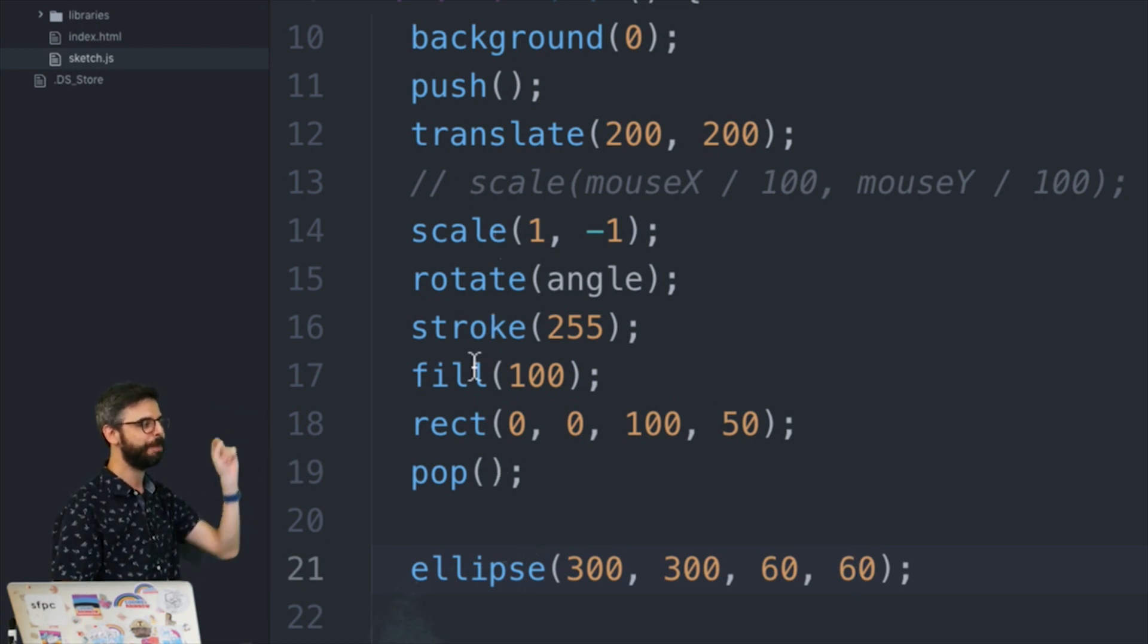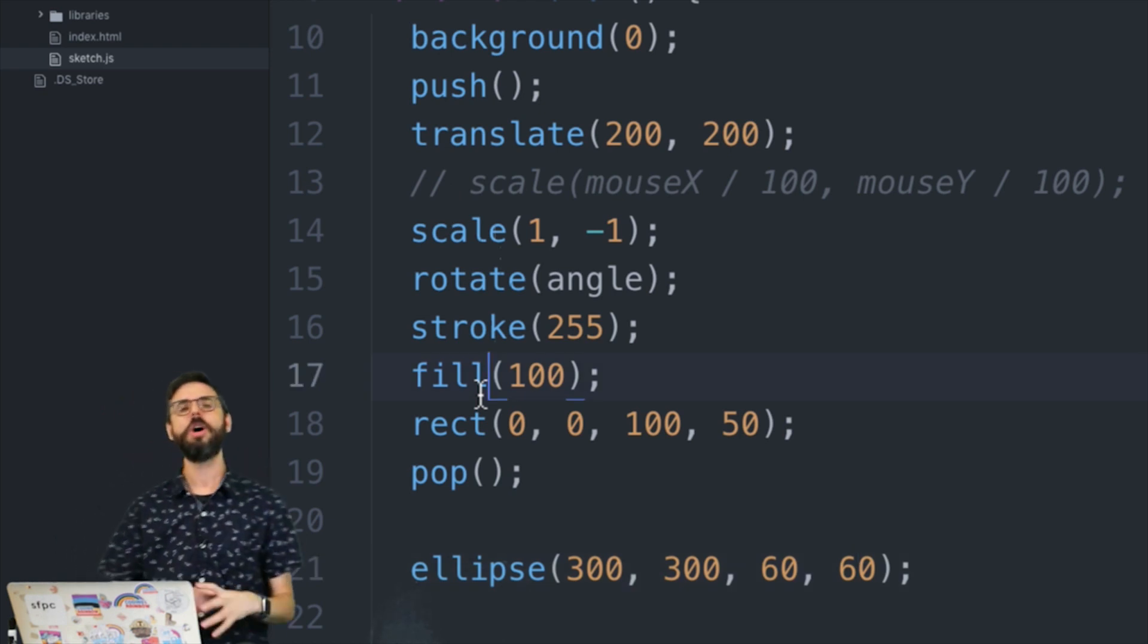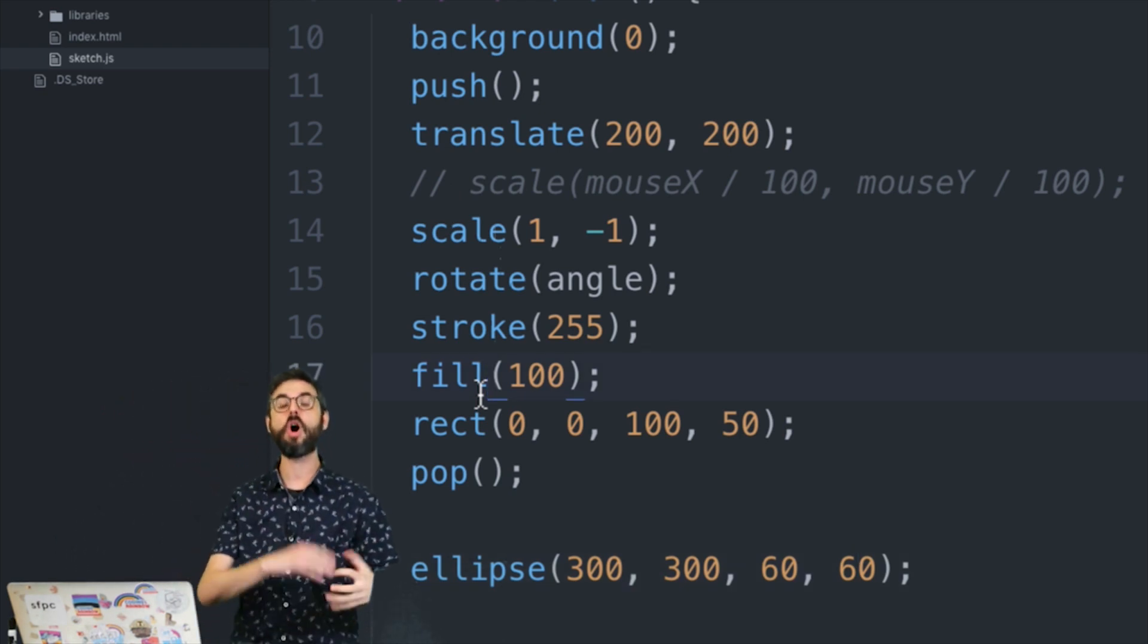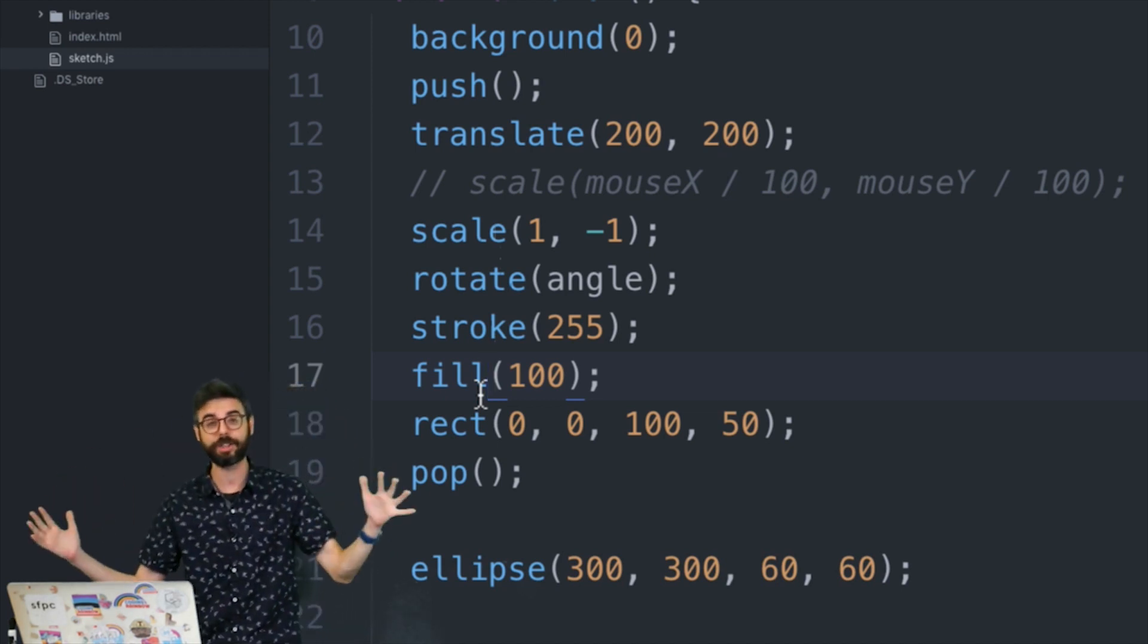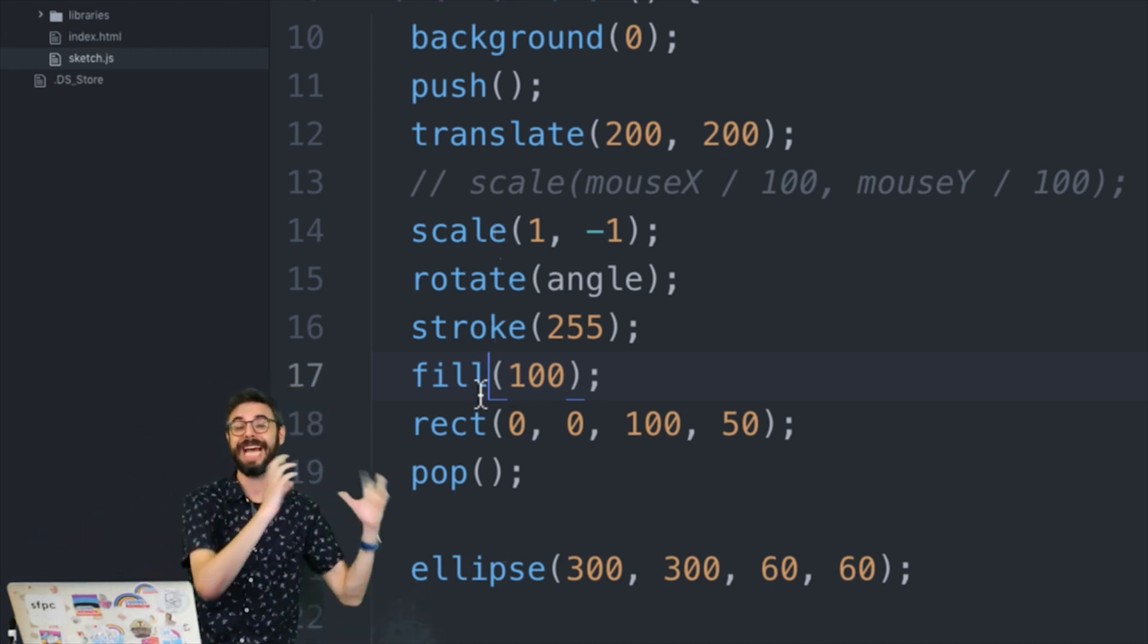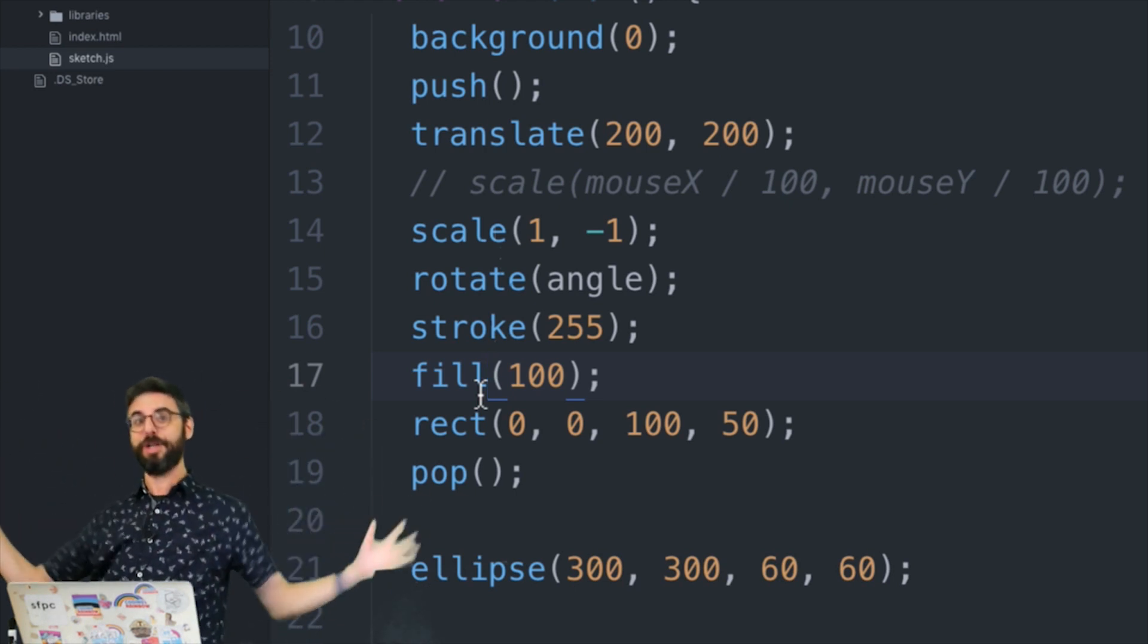But actually, push and pop also save and restore stroke weight, stroke, fill, all sorts of styling things. Now, if I could try to give you a list of every single function, that's everything with setting that's saved and restored by push and pop, I wouldn't know. I wouldn't be able to begin.